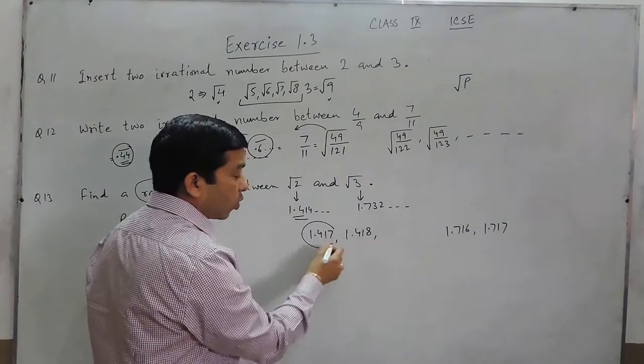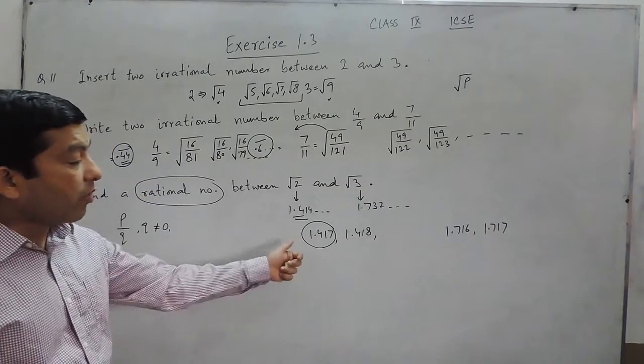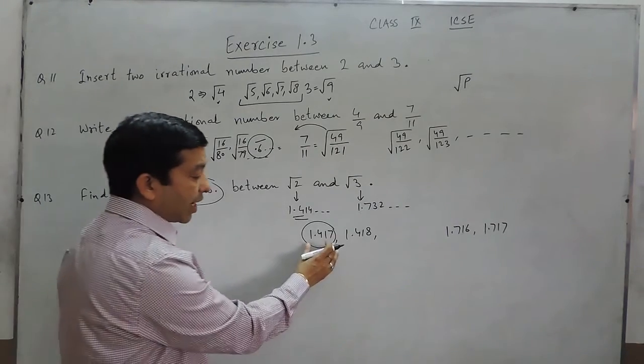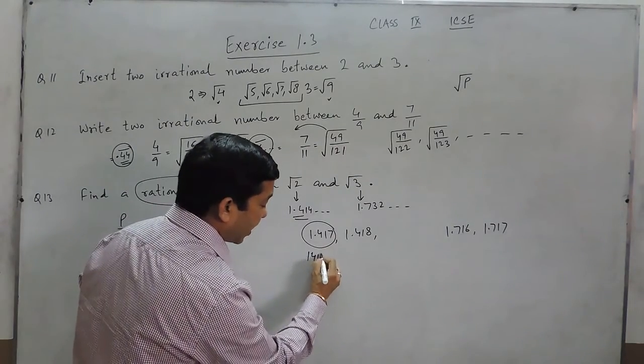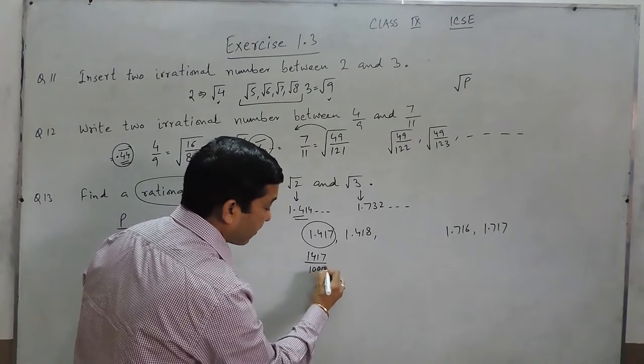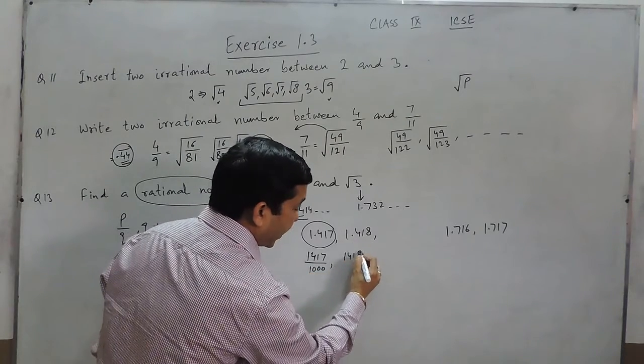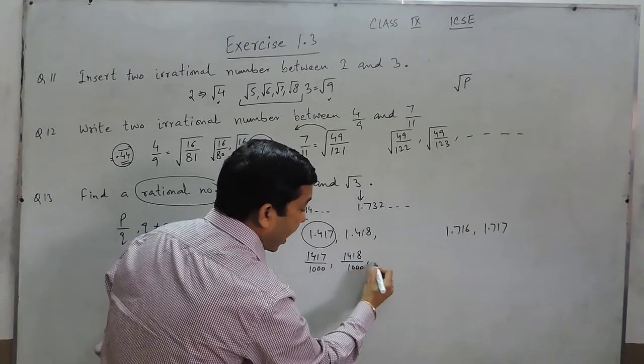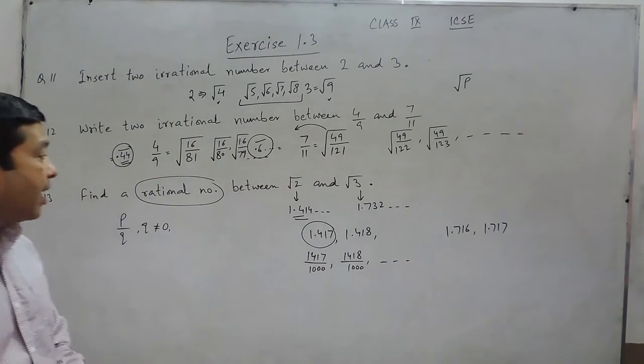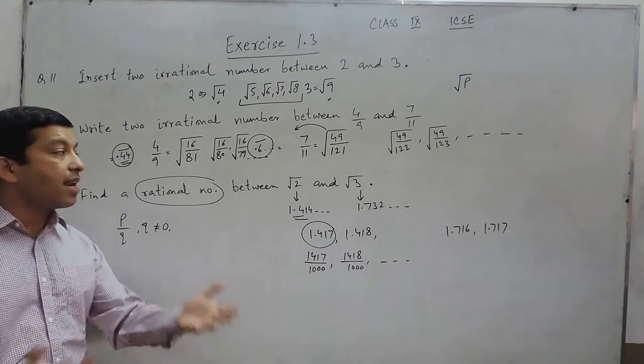Now an important thing is the number 1.417, we cannot write it like this. It is 1417 upon 1000. This is 1418 upon 1000.